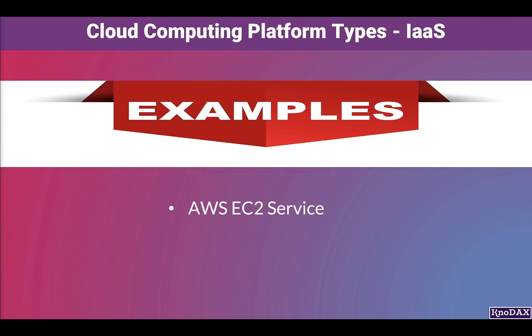Servers are technology infrastructure components. Another example is AWS Elastic Block Service, EBS. EBS is a storage service that is commonly used with EC2. This is also an Infrastructure as a Service, as it provides storage as a service. Storage is a technology infrastructure component.